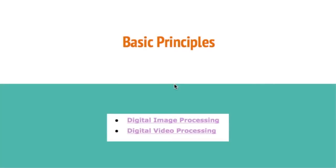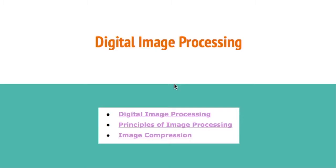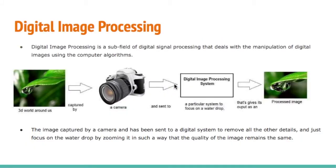There are two basic principles: the first is digital image processing and the second is digital video processing. There are three types of digital image processing: digital image processing, principles of image processing, and image compression. Digital image processing is a subfield of digital signal processing that deals with the manipulation of digital images using a computer. An image captured by a camera is sent to a digital system.